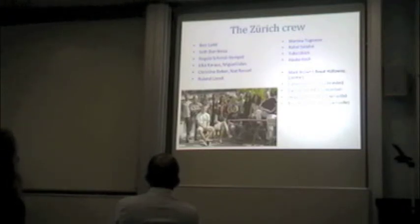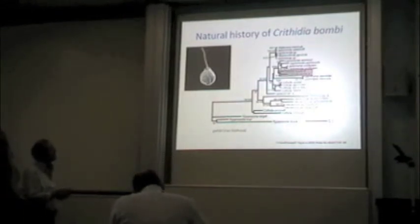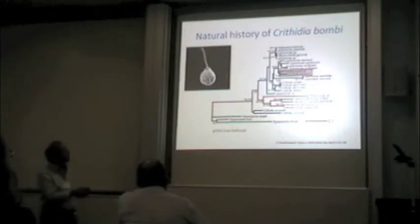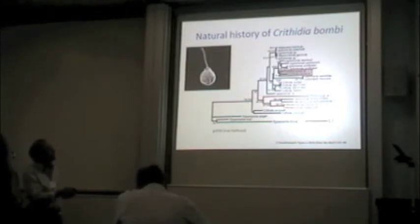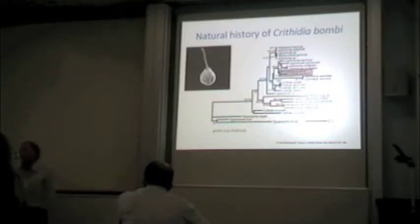The system I'm going to talk about is Crithidia bombi, which is a trypanosome. Here is where it belongs in its phylogeny. It is distantly related to the famous African trypanosomes brucei and cruzi. It is more closely related to Leptomonas and Phytomonas, so it's not unlikely that this bug initially entered the pollinator via plants — which makes a lot of sense if you're a pollinator, as they sometimes pick up infections from plants.